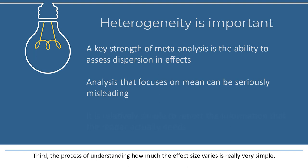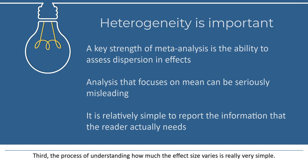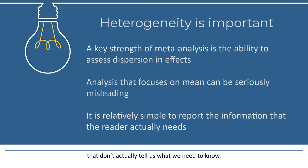And third, the process of understanding how much the effect size varies is really very simple. The confusion exists only because we work with statistics such as the Q value, I-squared, and Tau squared, that don't actually tell us what we need to know. If we simply report the relevant statistics, we could bypass all of these problems.